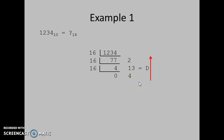But while writing down, we will write the answer in reverse order: 4D2. Therefore, 1234 base 10 is equal to 4D2 base 16. Let's take one more example.